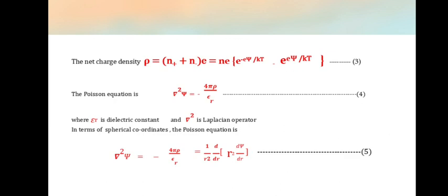Net charge density ρ is equal to (N+ + N-) into the charge. This is equal to N+ minus N- from the previous slide.